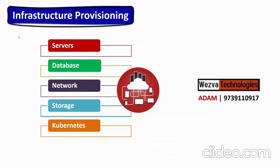When we say infrastructure provisioning — whether you take AWS, Azure, or GCP — for your different environments such as dev, QA, or production, all the things you need to create in the cloud is what we call infrastructure provisioning. That includes a bunch of machines to run your applications, databases to store backend data, a typical network to interconnect everything, and separate storage to manage logs, backup, and data.